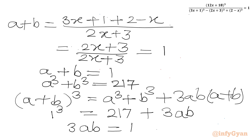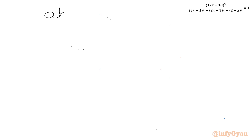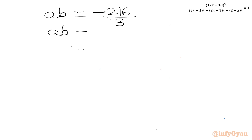So 1 minus 217 will be equal to minus 216. Therefore AB equals minus 216 divided by 3, which gives AB equal to minus 72.